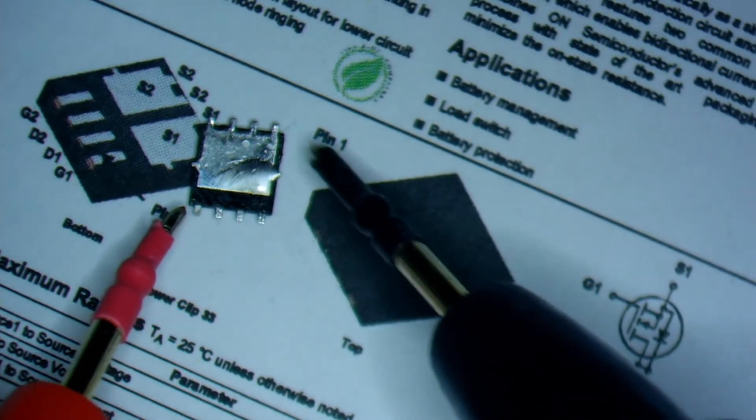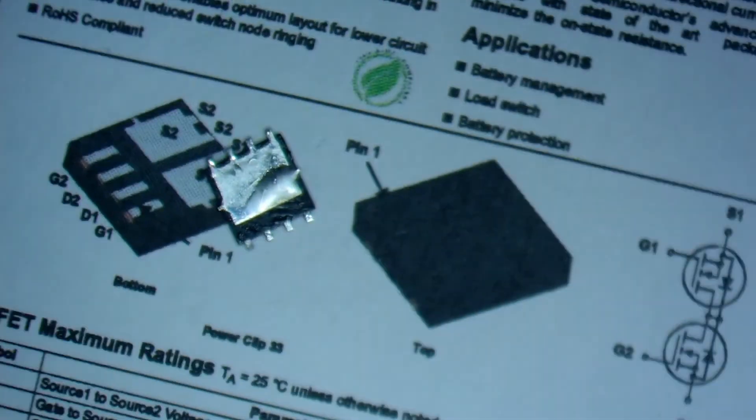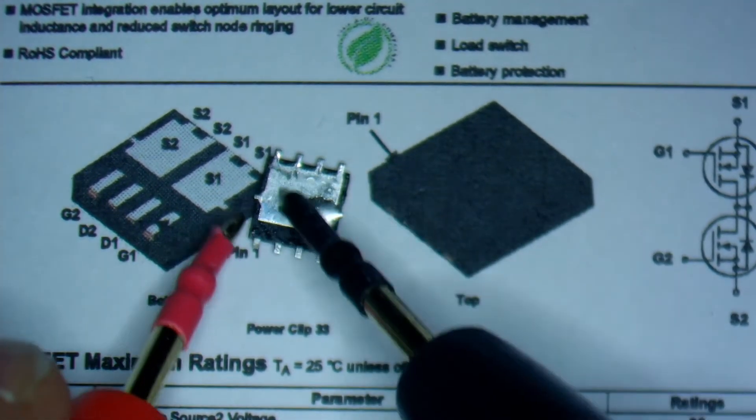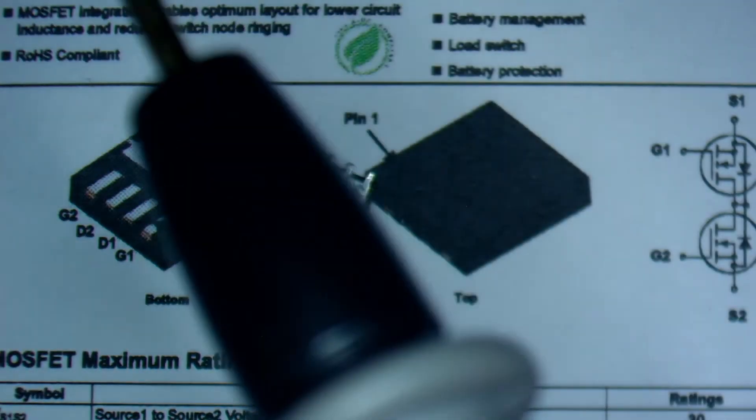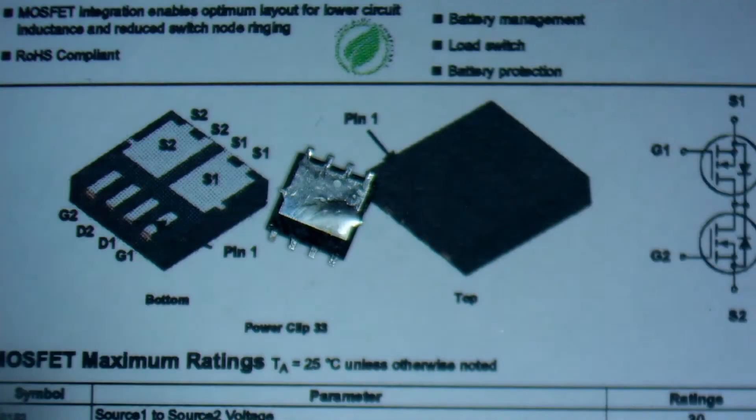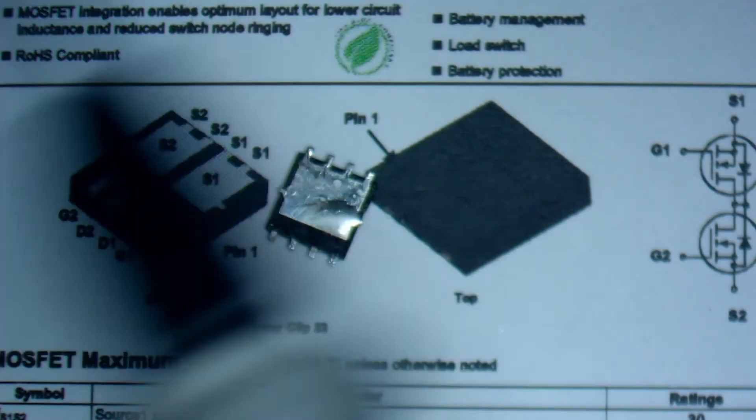So to test the N-channel MOSFETs, you need to charge the gate with a red probe. For the P-channel MOSFETs, you open the gate with a red probe. That's the difference.